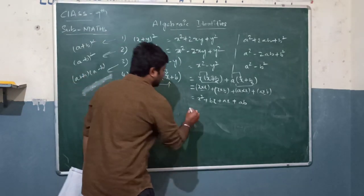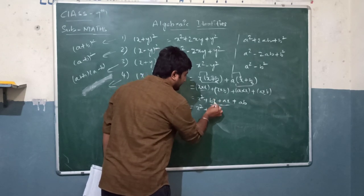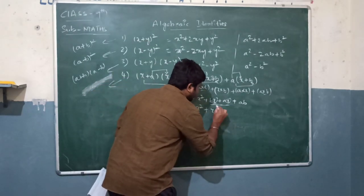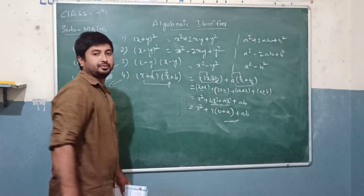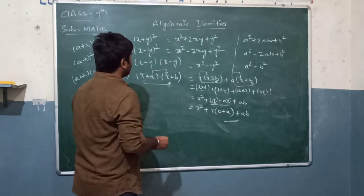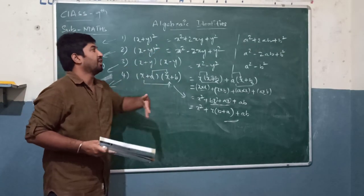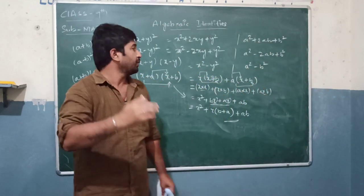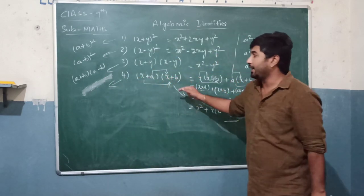This gives us x squared plus x into b, bx, plus ax, plus ab. Taking x common from bx and ax: x squared plus b plus a times x plus ab. Or you can write x squared plus a plus b times x plus ab. This is the expression. You obviously know a plus b whole square, a minus b whole square - these can be easily solved. These are the fourth kind of algebraic identities we use to solve problems.